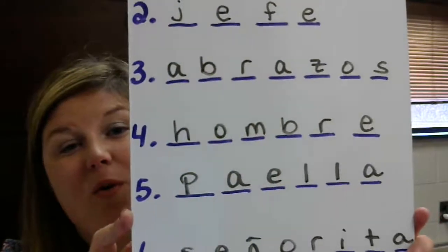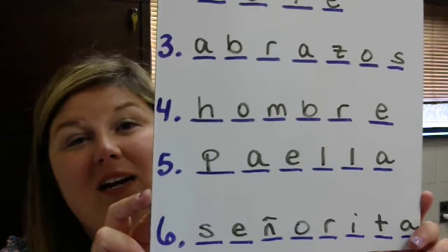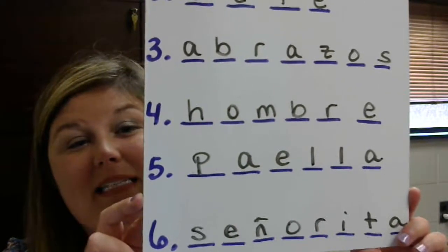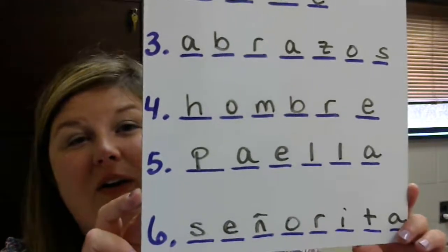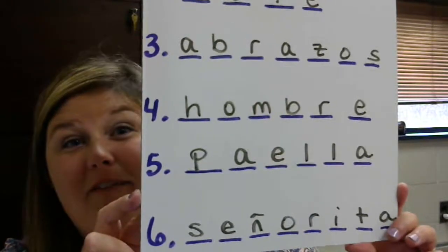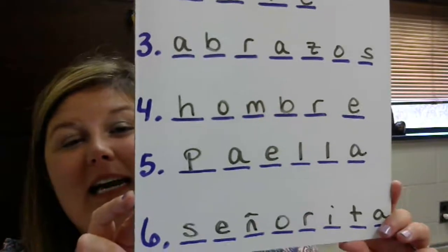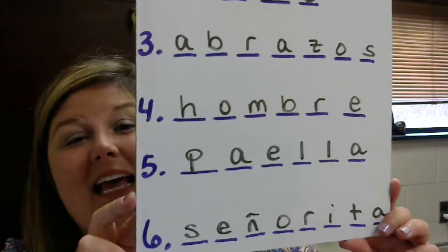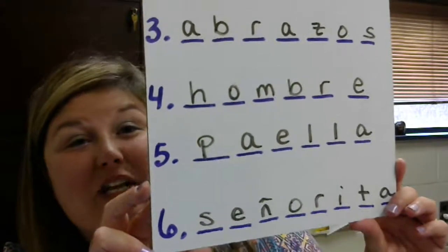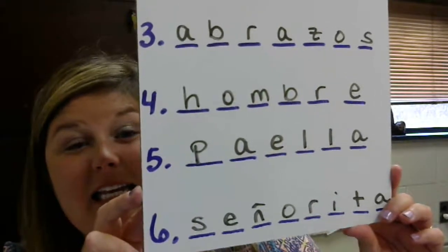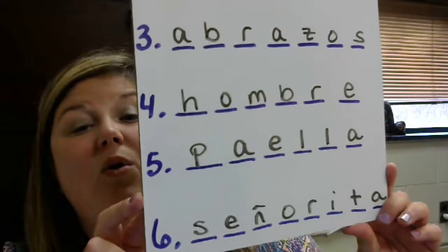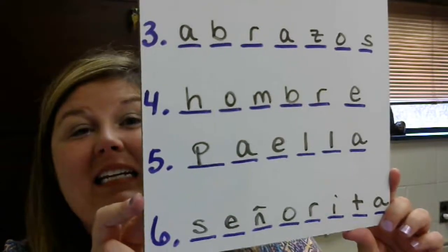Number four, numero cuatro, is hombre. H-O-M-B-R-E. Hombre means man. Numero cinco, number five, paella. Paella is a yummy dish from Spain. If you've never had paella, look it up — it's delicious. Paella is spelled P-A-E-L-L-A. Numero seis, number six, is señorita, which is a young lady, and it's spelled S-E-Ñ-O-R-I-T-A.